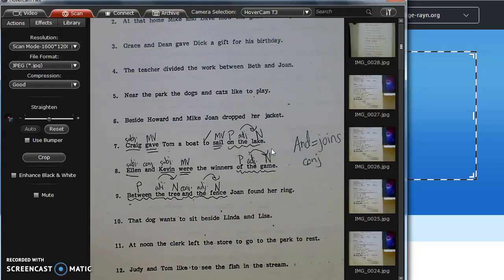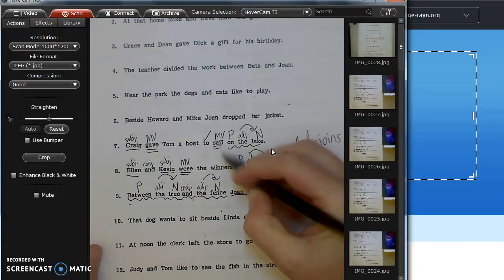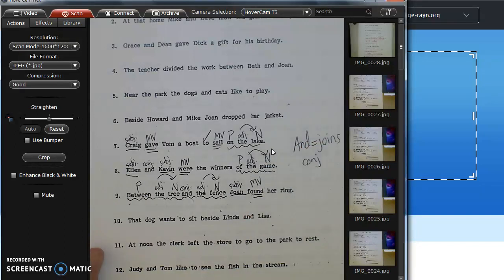Whew, that was a long prepositional phrase. So now I ask myself who or what is doing the action, and that is Joan, and what is Joan doing? Joan found. Joan is my subject. Found is my main verb.